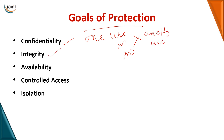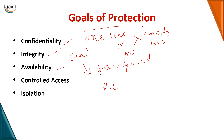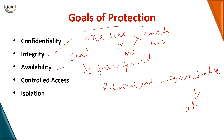Integrity means that whatever data you are sending or storing should be in a correct format — the data should not be tampered. Availability means that whatever resources are required for accessing the data should be available to the user to perform the operation at any time.